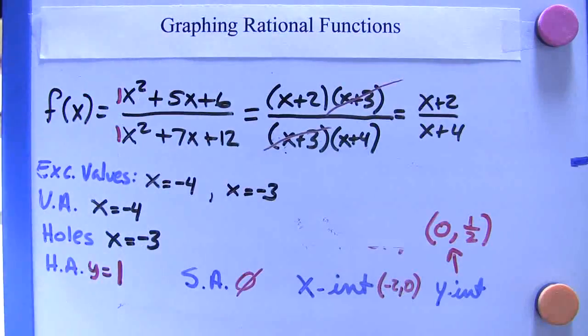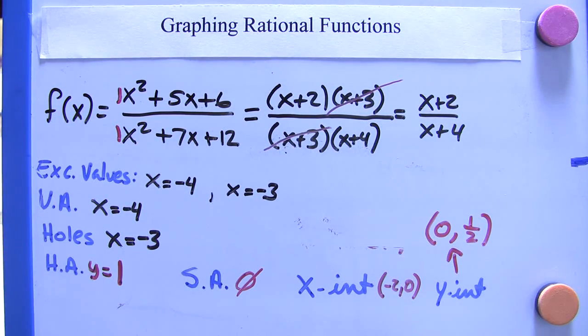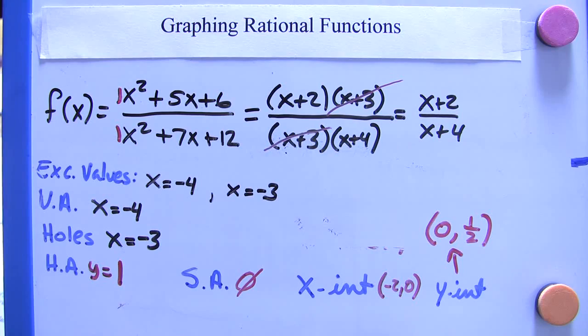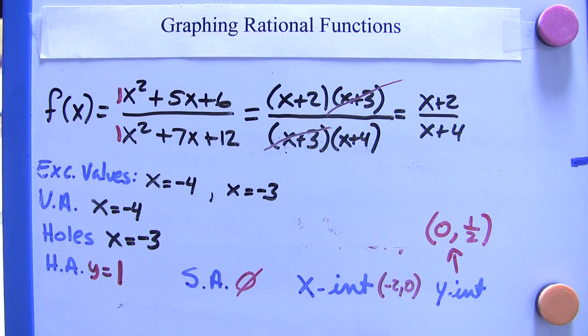I hope you found this to be a good introduction to graphing rational expressions. I intend to do some more sample problems where the horizontal asymptotes or the slant asymptotes are a bit different. Thanks for watching.